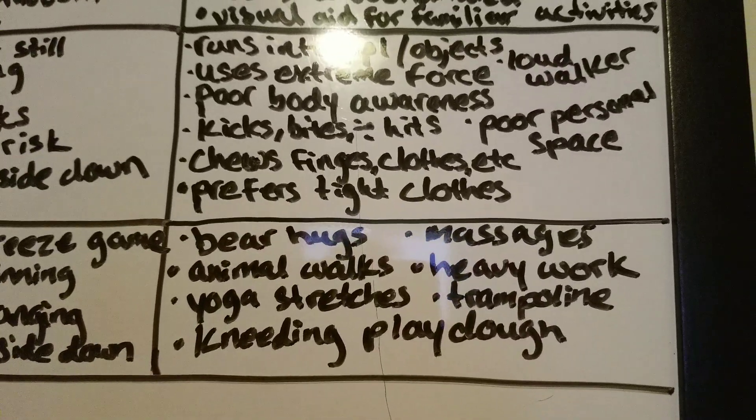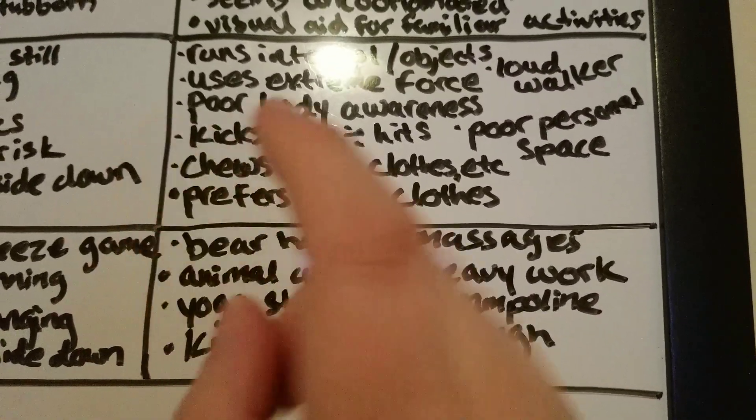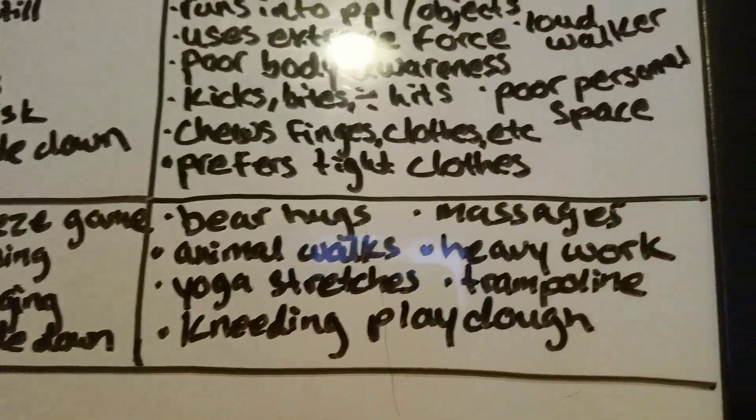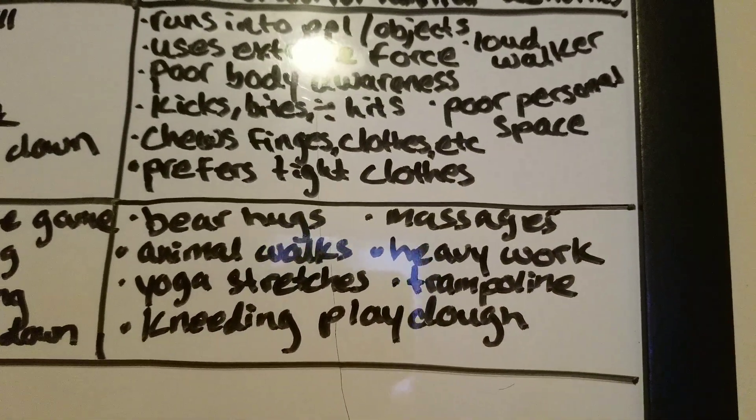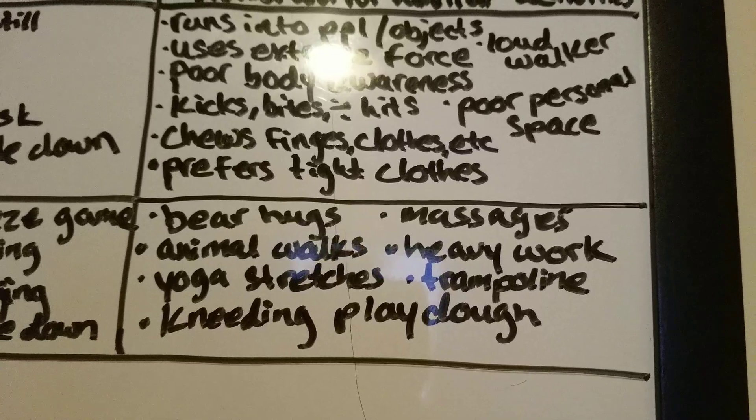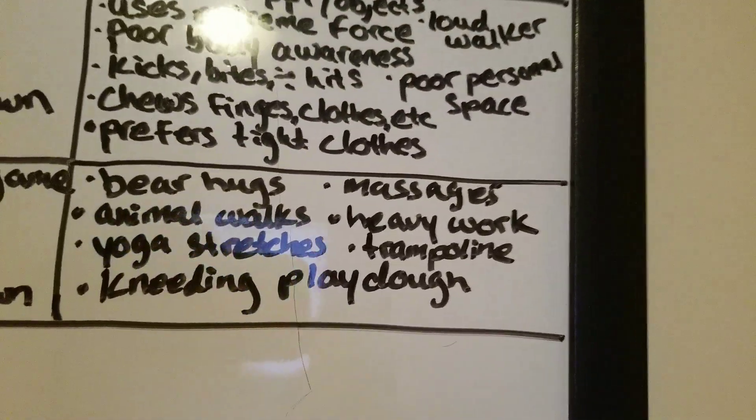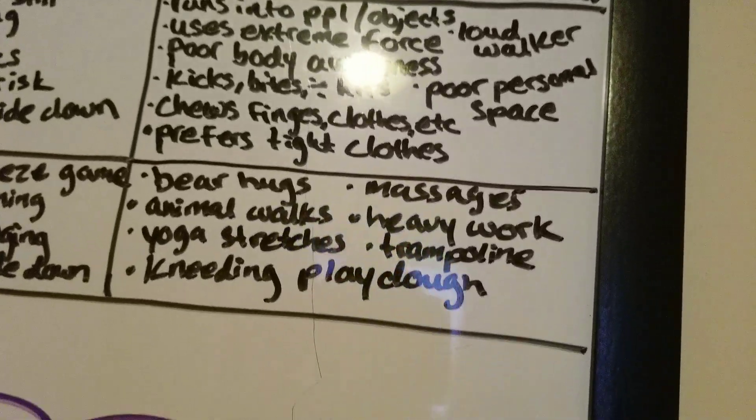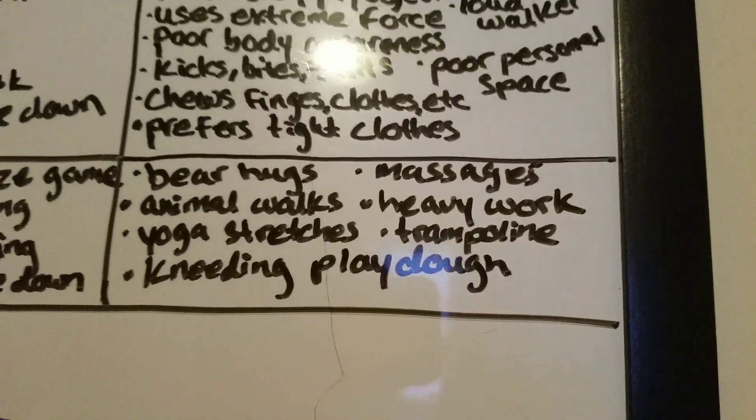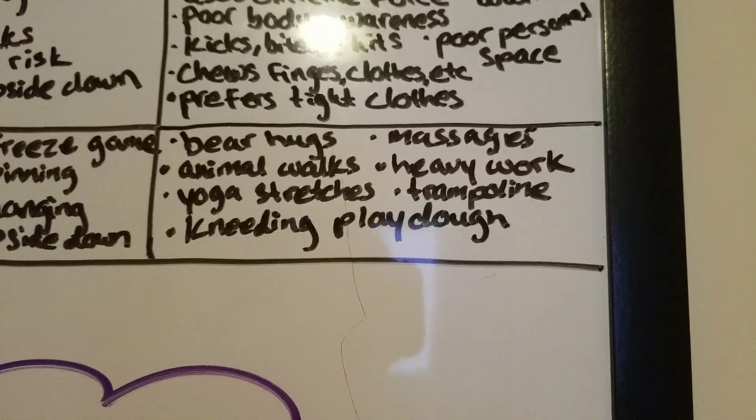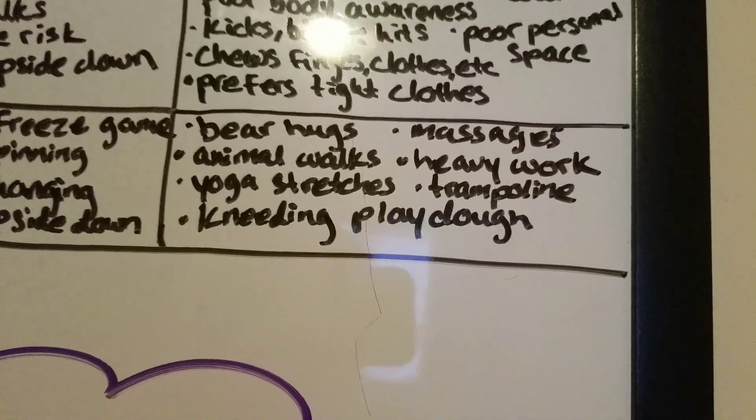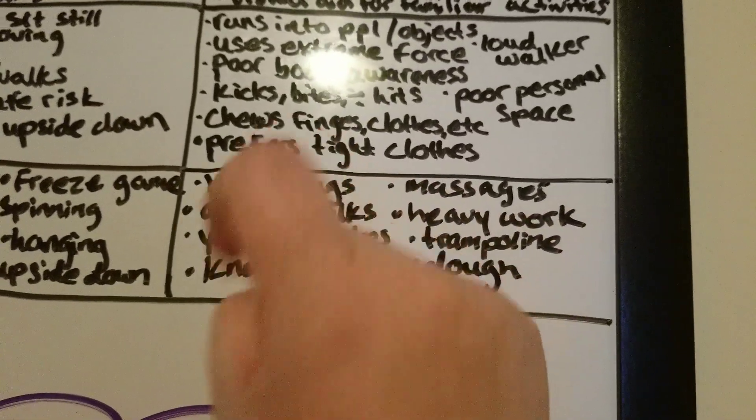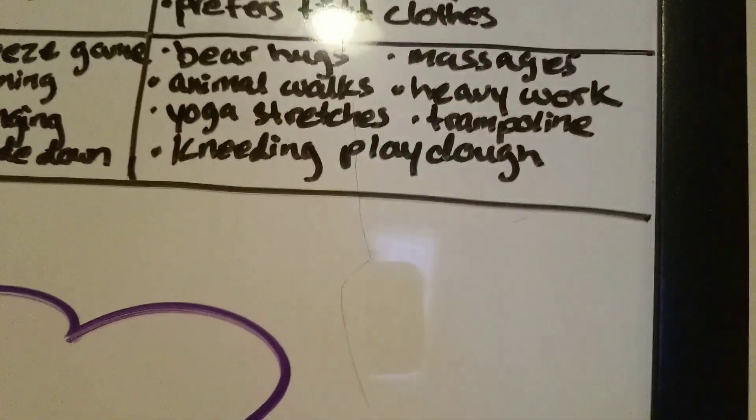They may also have poor body awareness. They can show behaviors such as kicking and biting and hitting people. They also may struggle with personal space. They prefer to wear tight clothing because they want something that's restricting, that's tight on them so that they're getting that input. They also may have a behavior of chewing on their fingers, clothing, items. I just realized I spelled fingers wrong.